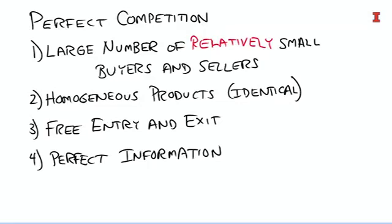And finally, perfect information. Perfect information is really one of the more crucial assumptions here. In fact, there's basically a whole branch of economics now called information economics, because there are lots of information problems in markets. If you don't have good information, you can sometimes see very different outcomes.